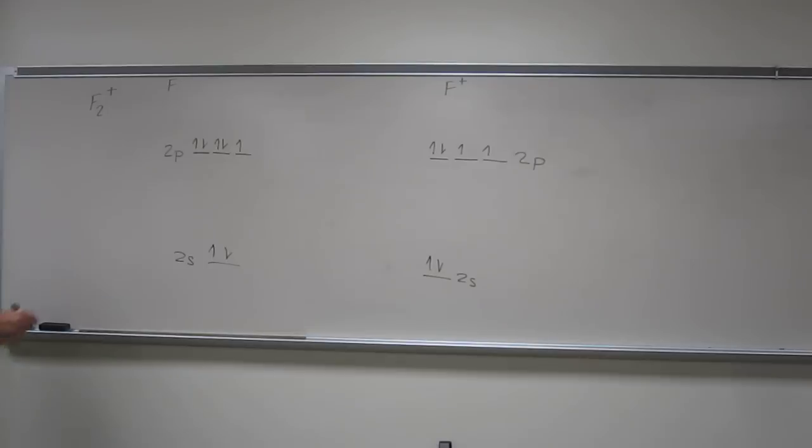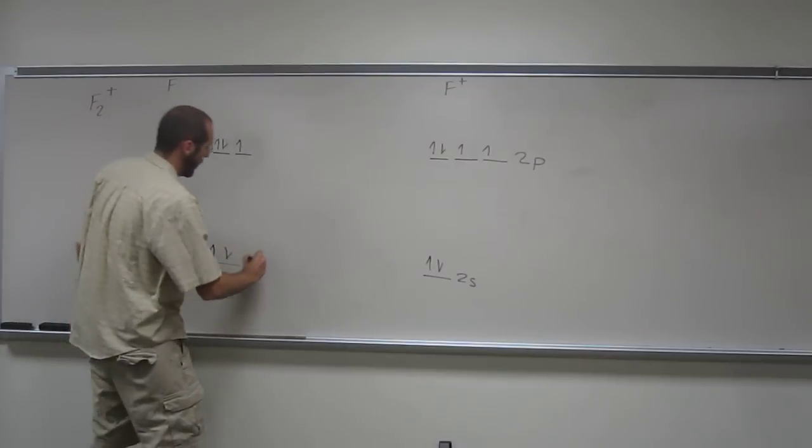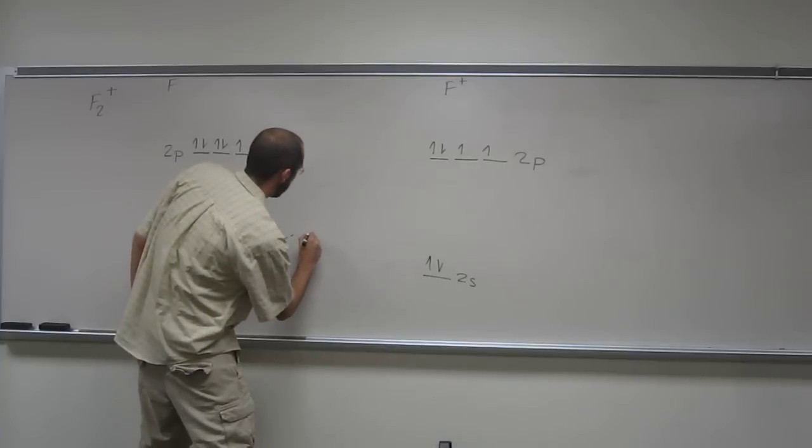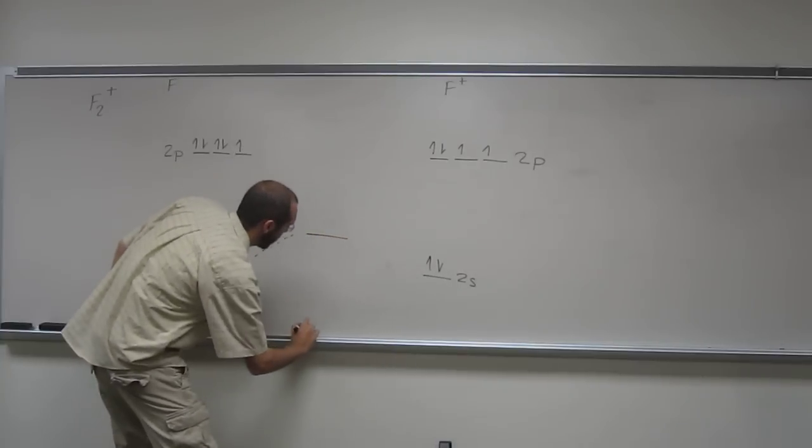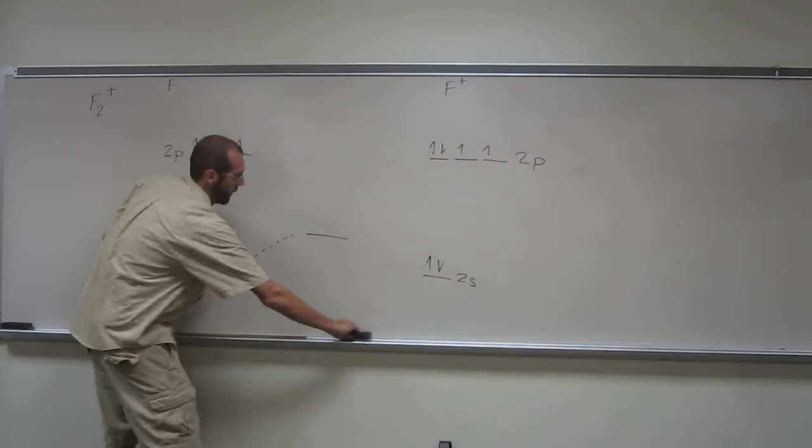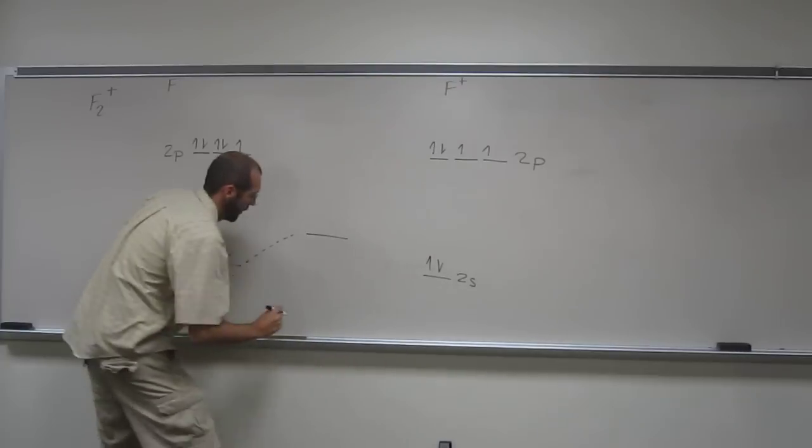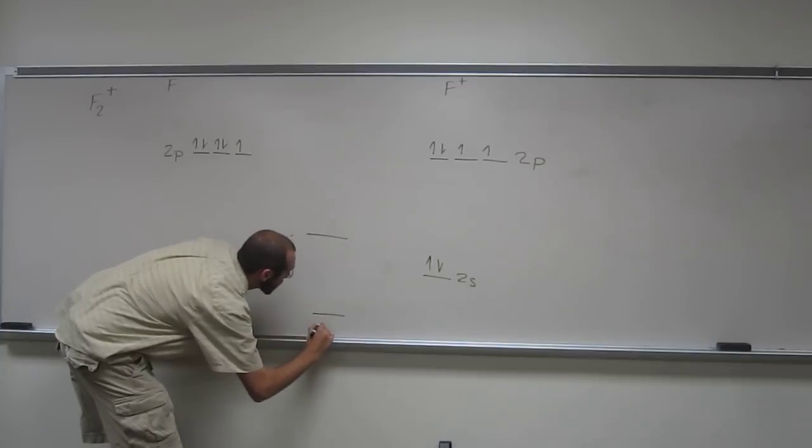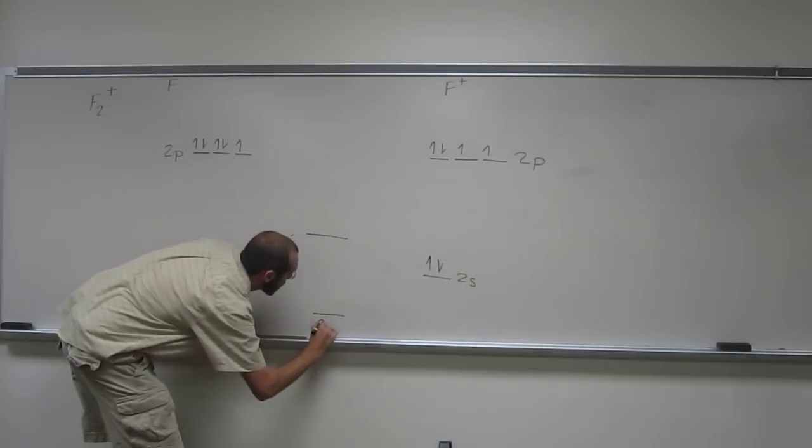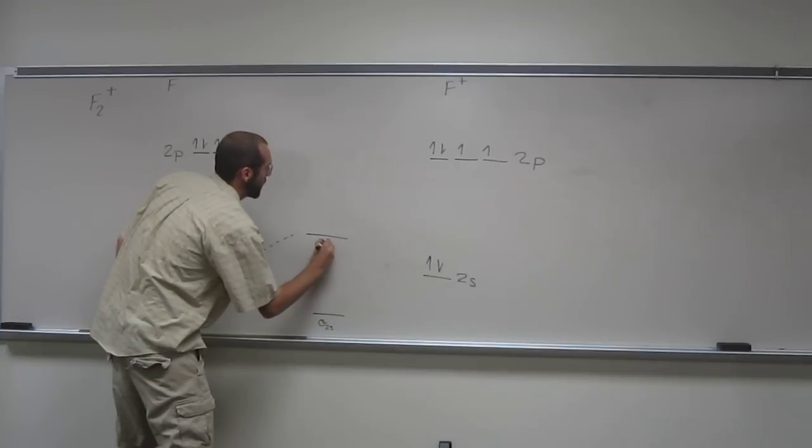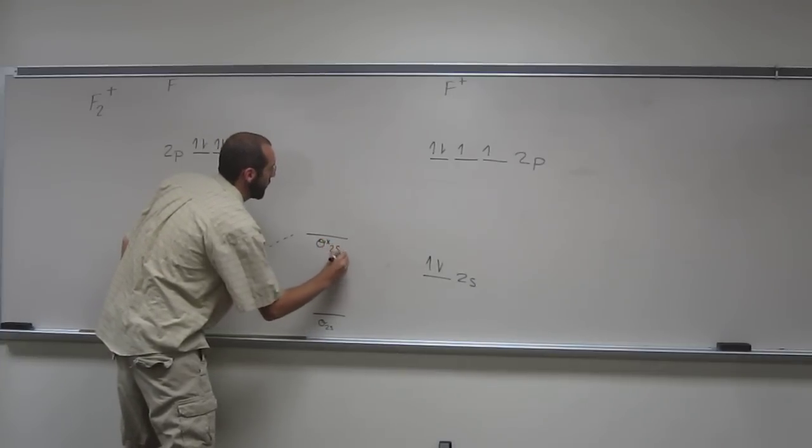So now let's build the molecular orbital diagram. Remember, for each bonding orbital, we have an anti-bonding orbital. So this one's going to be the sigma 2s orbital, and this one's going to be the sigma star 2s orbital.